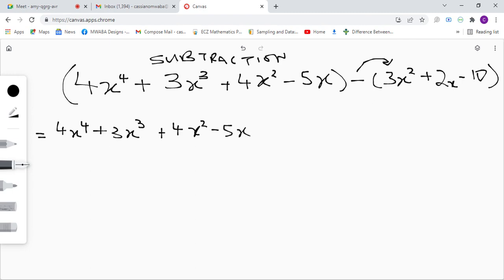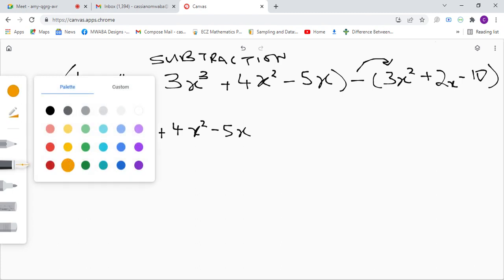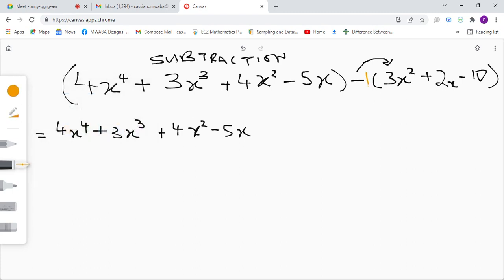Now we can distribute the negative sign. So we say this is like saying this is negative 1. So we say negative 1 times 3x squared, we get negative 3x squared. Negative 1 times 2x, we get negative 2x. Then negative 1 times 10, we get positive 10.